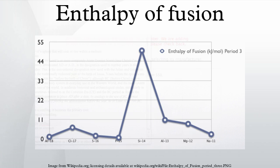Helium is the only known exception. Helium-3 has a negative enthalpy of fusion at temperatures below 0.3 K. Helium-4 also has a very slightly negative enthalpy of fusion below 0.8 K. This means that, at appropriate constant pressures, these substances freeze with the addition of heat.